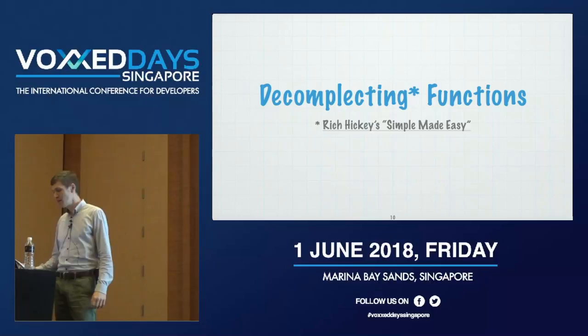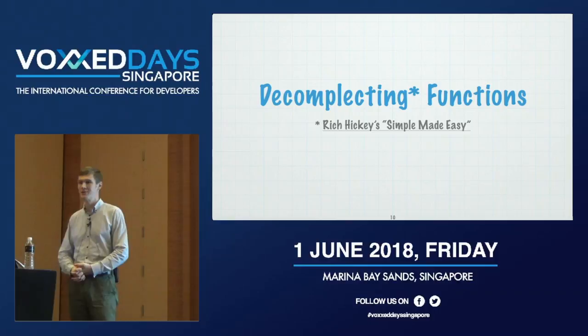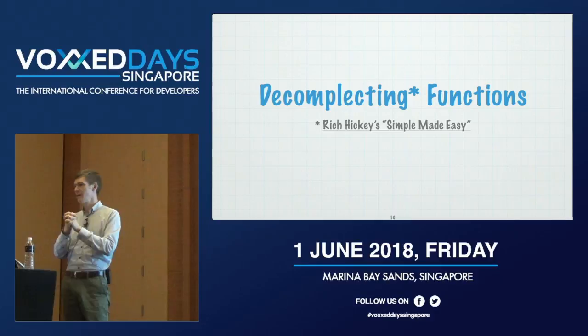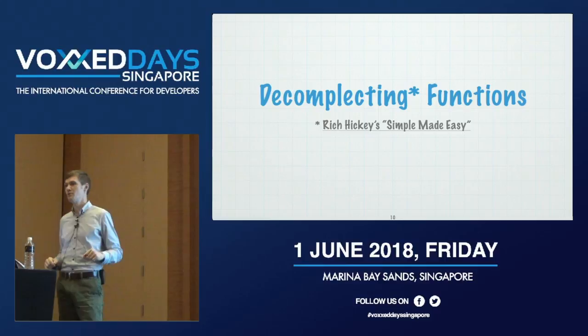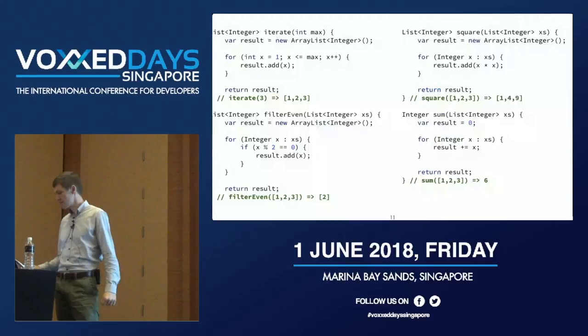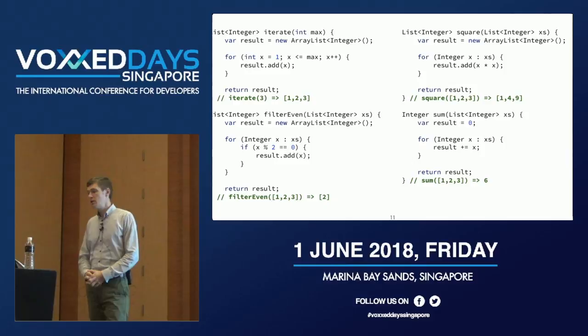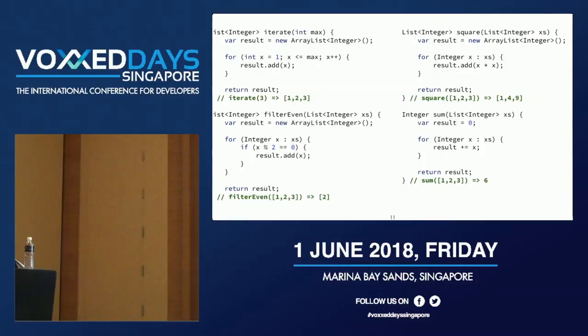Let's try to first decomplect this function. Decomplect is a term from Rich Hickey's talk 'Simple Made Easy' — complex means things are intertwined and entangled, so we want to decomplect them. We want to extract all four responsibilities we saw in the first program into separate functions. We have a function iterate that takes an integer and returns a list of integers. The pattern is the same — I have a result, loop through, add results to the list, and return.